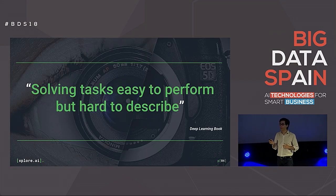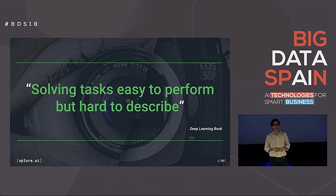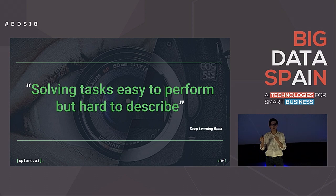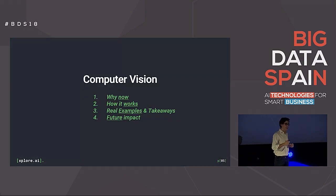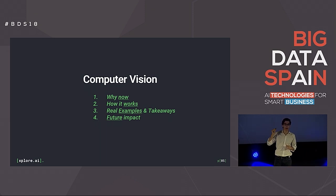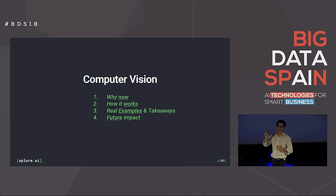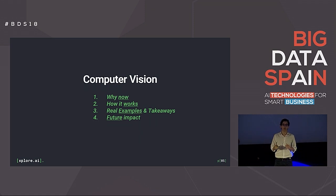The most amazing thing is that machines nowadays are solving tasks that are easy to perform by humans but very hard to explain, like seeing or detecting objects. In this talk we want to cover computer vision: why now, how it works, real examples and takeaways, and the future impact.